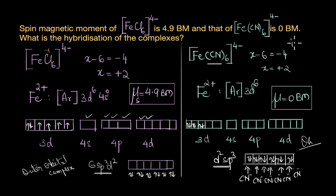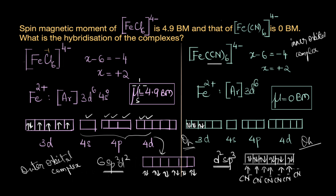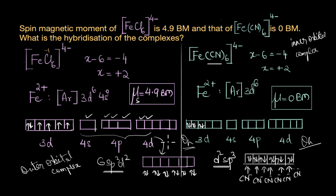We are not directly commenting on the strength of the ligand here. All our understanding of hybridization is based on the experimental spin magnetic moment data. A non-zero magnetic moment means unpaired electrons, which almost always indicates outer orbitals are used for bonding — an outer orbital complex with sp³d² hybridization. When the complex is diamagnetic, inner orbitals are available for bonding, giving an inner orbital complex with d²sp³ hybridization. This applies when coordination number is 6.